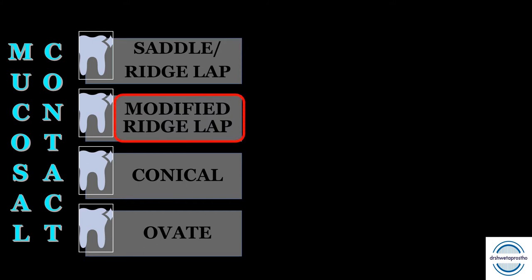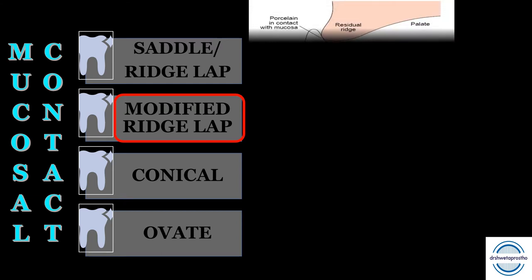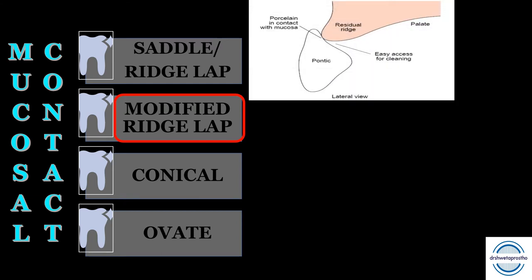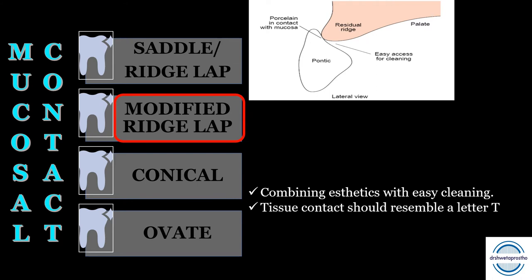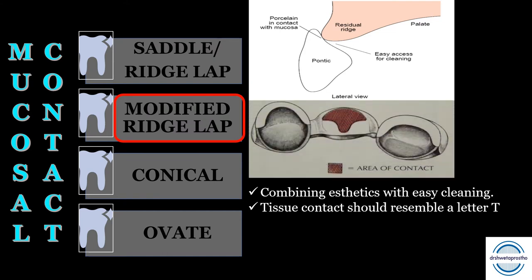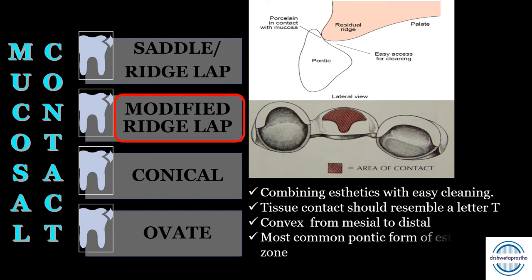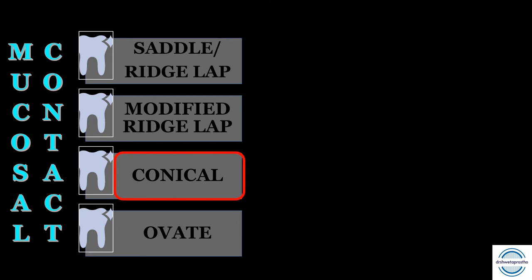The modified ridge lap pontic overlaps the residual ridge on the facial side and remains clear of the ridge on the lingual side — a good combination of aesthetics and easy cleaning. Its tissue contact should resemble the letter T, whose vertical arm ends at the crest of the ridge. It should be convex from mesial to distal for easier oral hygiene. It is the most common pontic form used in the aesthetic zone: maxillary and mandibular anterior teeth, maxillary premolars, and first molars.